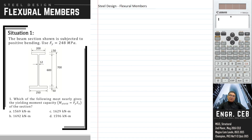Welcome back to my YouTube channel. We will now solve problems on flexural members. The beam section shown is subjected to positive bending. Fy is equal to 248 MPa. Which of the following most nearly gives the yielding moment capacity of the section?